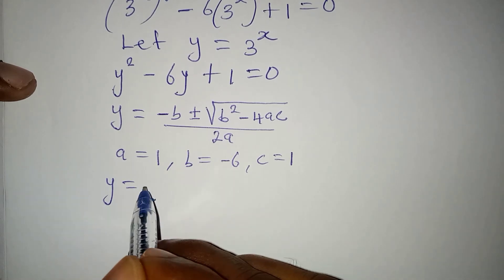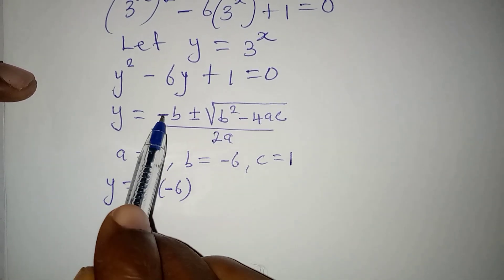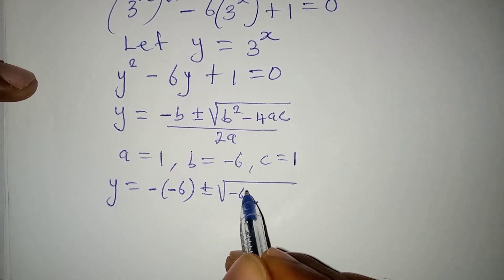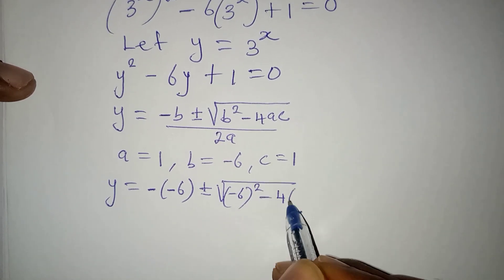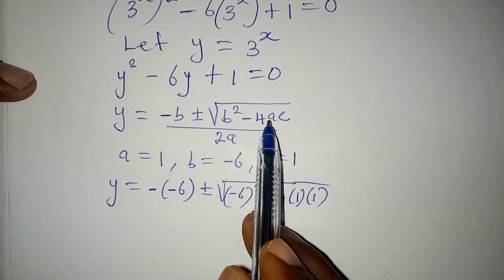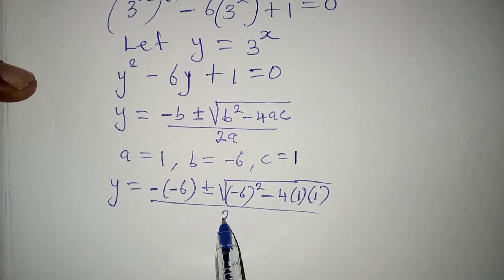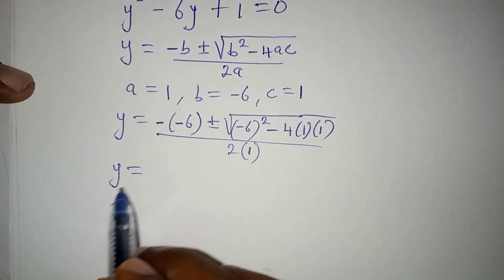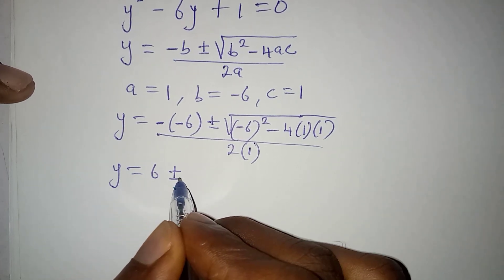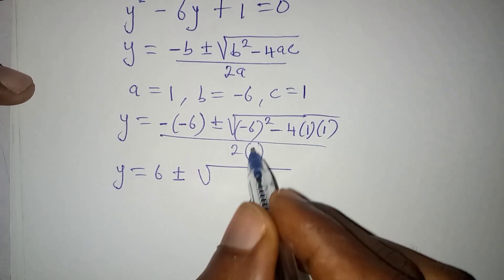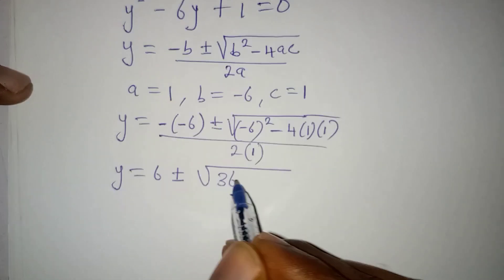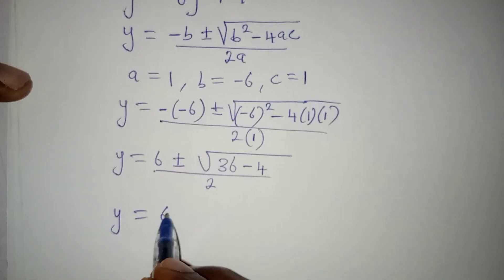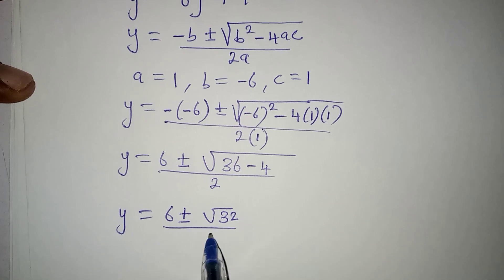So y becomes negative of negative 6, because we have negative b and b itself is negative 6. Then we have plus or minus square root of negative 6 squared minus 4 times 1 times 1, because a is 1 and c is also 1. The whole of this will be divided by 2 times 1. Taking a step further, we have y equal to 6, plus or minus square root of 36 minus 4, over 2. So y becomes 6 plus or minus square root of 32, over 2.